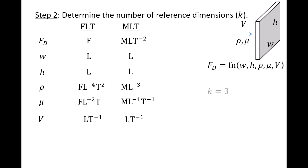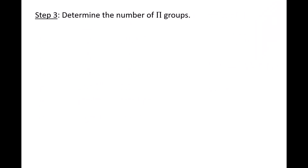Notice that we need force, length, and time to completely describe the dimensions of the six variables in the FLT system, and we need mass, length, and time in the MLT system. Since the number of basic dimensions in both systems is the same — it's 3 — the number of reference dimensions k is 3 as well. The Buckingham Pi theorem states that the number of pi groups needed is the number of variables n minus the number of reference dimensions k, which is 6 minus 3, meaning we'll need three pi groups.